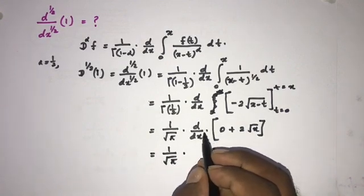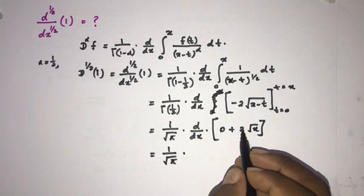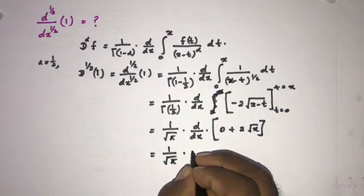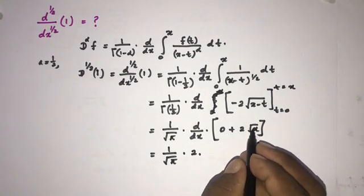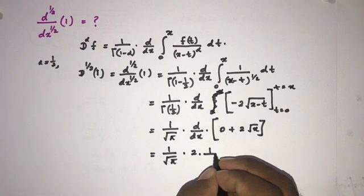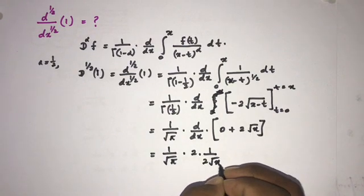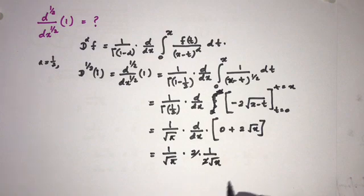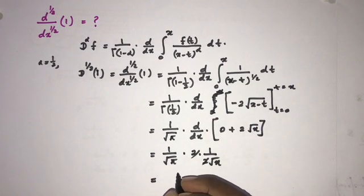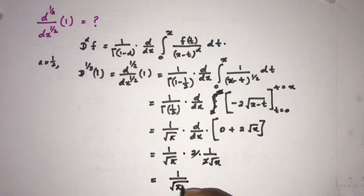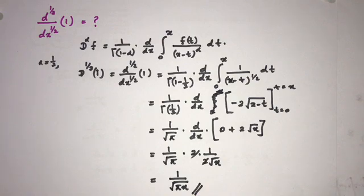and here derivative of 2 times square root of x. We know 2 times derivative of square root of x is 1 over 2 times square root of x. The 2 gets cancelled and this is equal to 1 over square root of pi times x. This is the answer and this is the half derivative of 1.